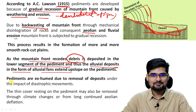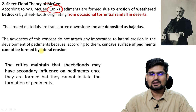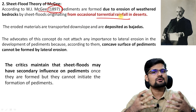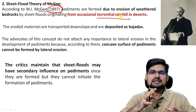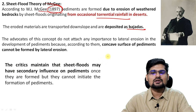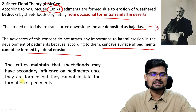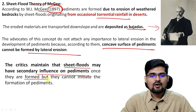Sheet flood theory of McGee, 1897 — just before Lawson's theory. He said it happens because of weathering and erosion in torrential rainfall areas in deserts, where you have sudden abrupt torrential rainfall. So much water suddenly erodes lots of surfaces and transports lots of material in the formation of bajadas. The concave surface of pediments cannot be formed because of lateral erosion — it forms mainly because of sheet floods. This theory was later criticized because sheet floods may have secondary influence on pediments once formed, but they cannot initiate pediment formation.